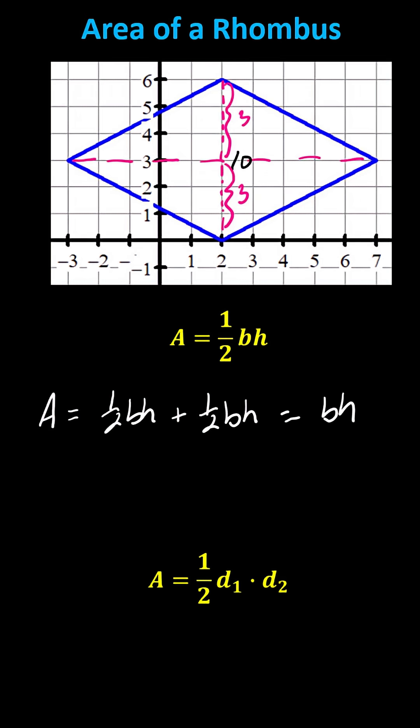The total area A is equal to 10 times 3, which gives us 30 square units.